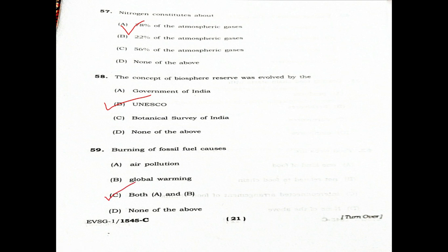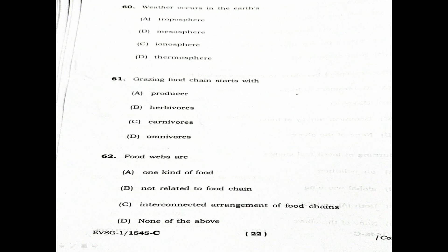Question 60: Weather occurs in which of the following? Option A: Troposphere. Option B: Mesosphere. Option C: Ionosphere. Option D: Thermosphere. Be aware of this — Troposphere is the correct answer.